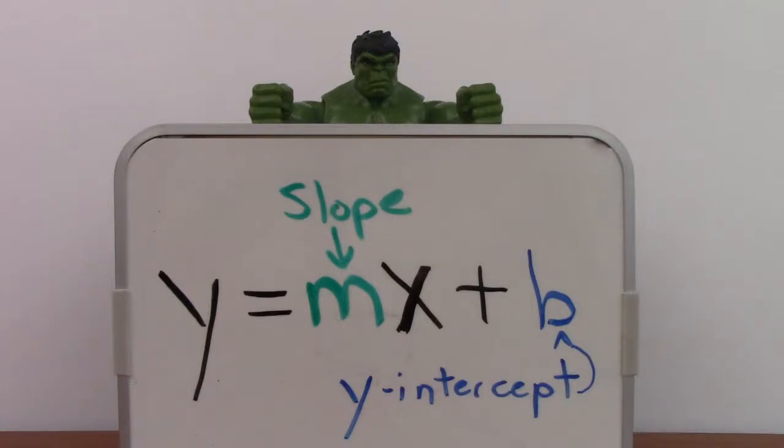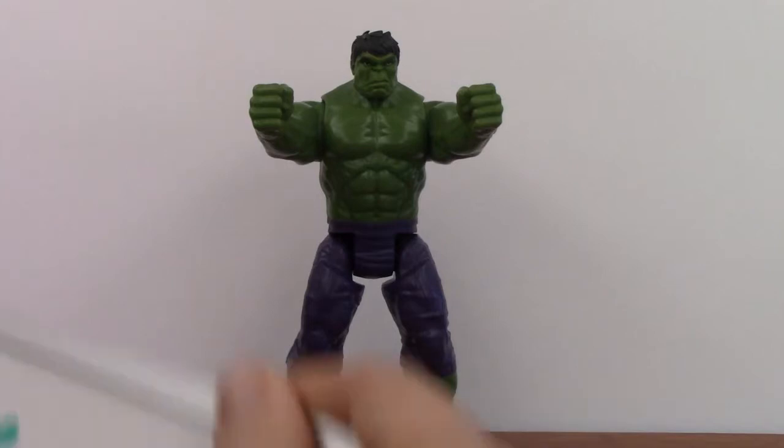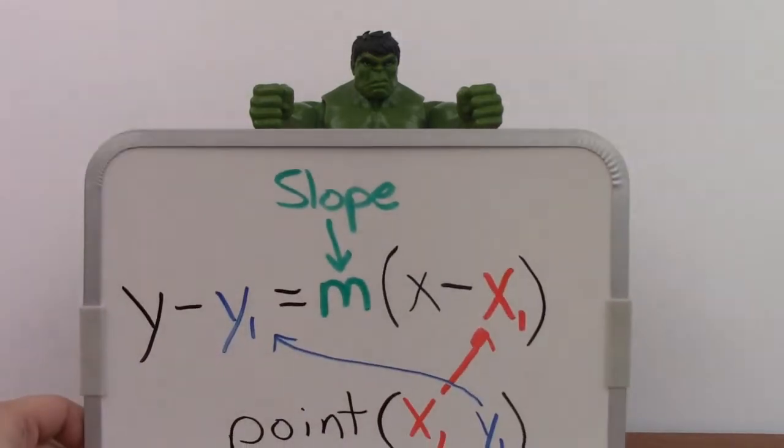Hey Hulk, what do you have for us today? Two formulas. Y equals mx plus b, slope-intercept form, m is slope, b is y-intercept, and point-slope form.